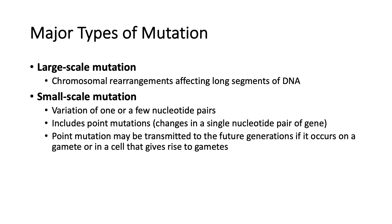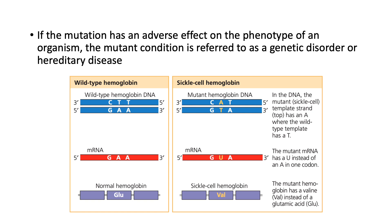In this discussion, we will focus on small-scale mutations of one or a few nucleotide pairs, including point mutations, which are changes in a single nucleotide pair of a gene. If a point mutation occurs in a gamete or in a cell that gives rise to gametes, it may be transmitted to offspring and to a succession of future generations. If the mutation has an adverse effect on the phenotype of an organism, the mutant condition is referred to as a genetic disorder or hereditary disease. For example, we can trace the genetic basis of sickle cell disease to the mutation of a single nucleotide pair in the gene that encodes the beta-globin polypeptide of hemoglobin. The change of a single nucleotide in the DNA's template strand leads to the production of an abnormal protein.